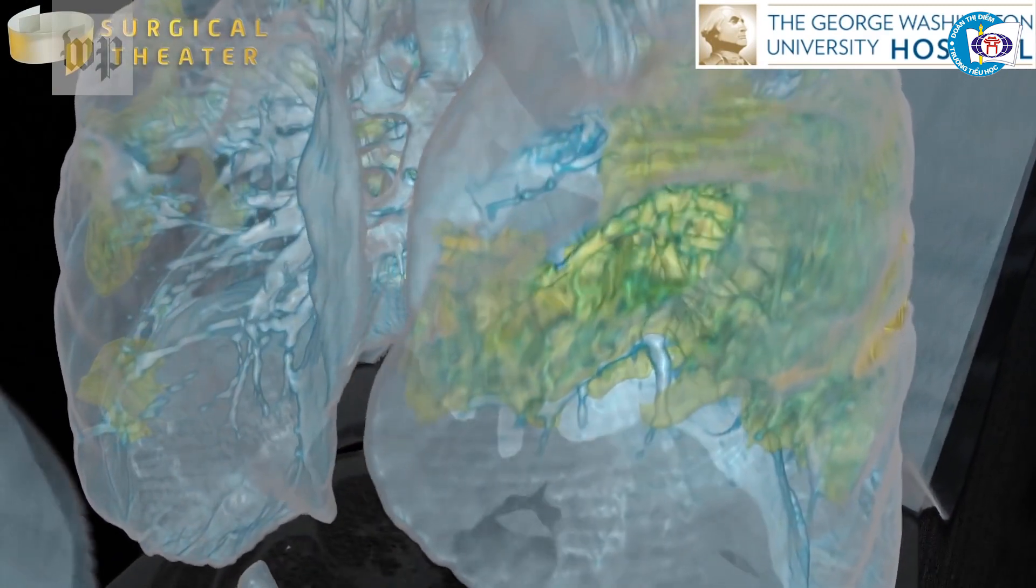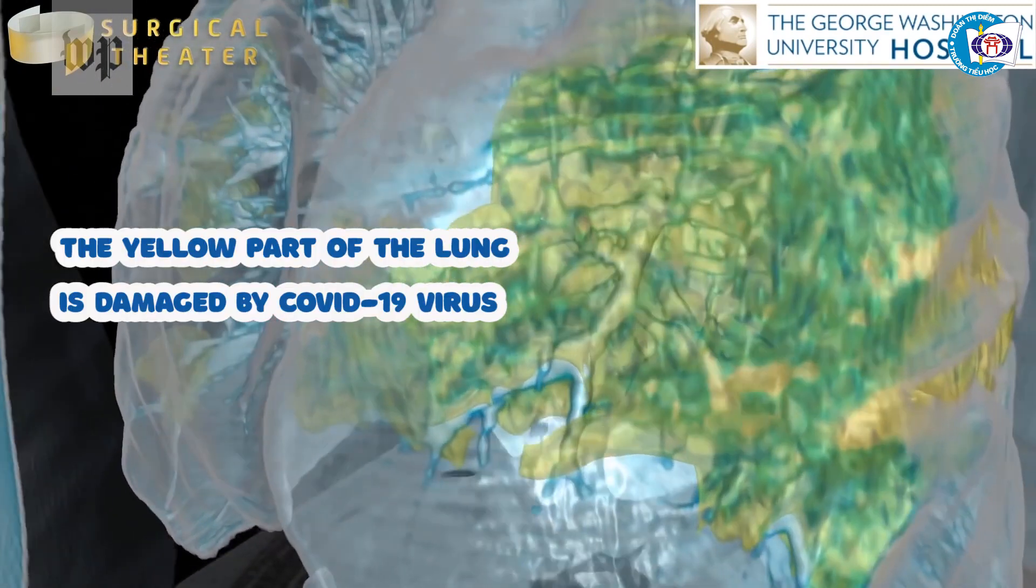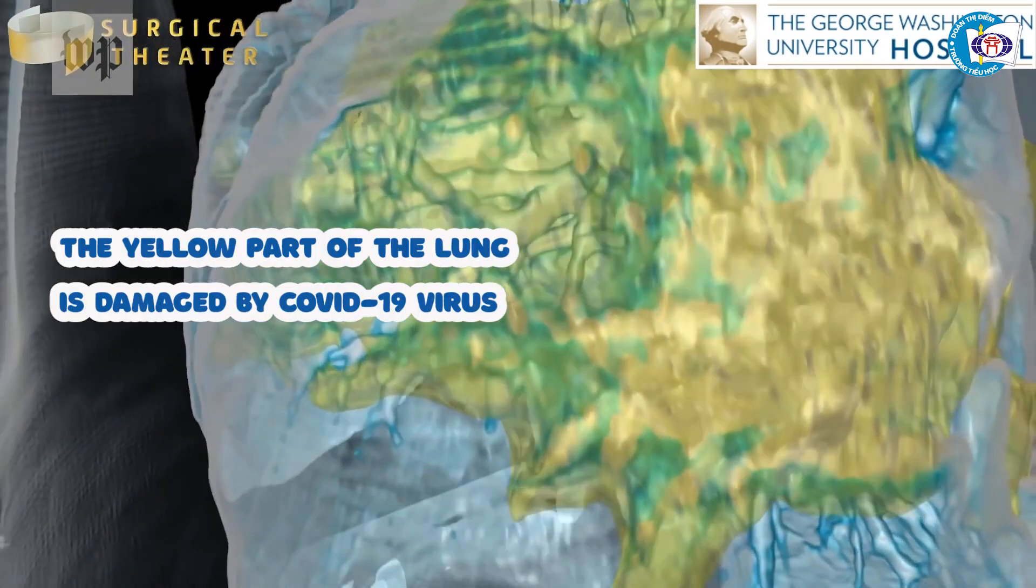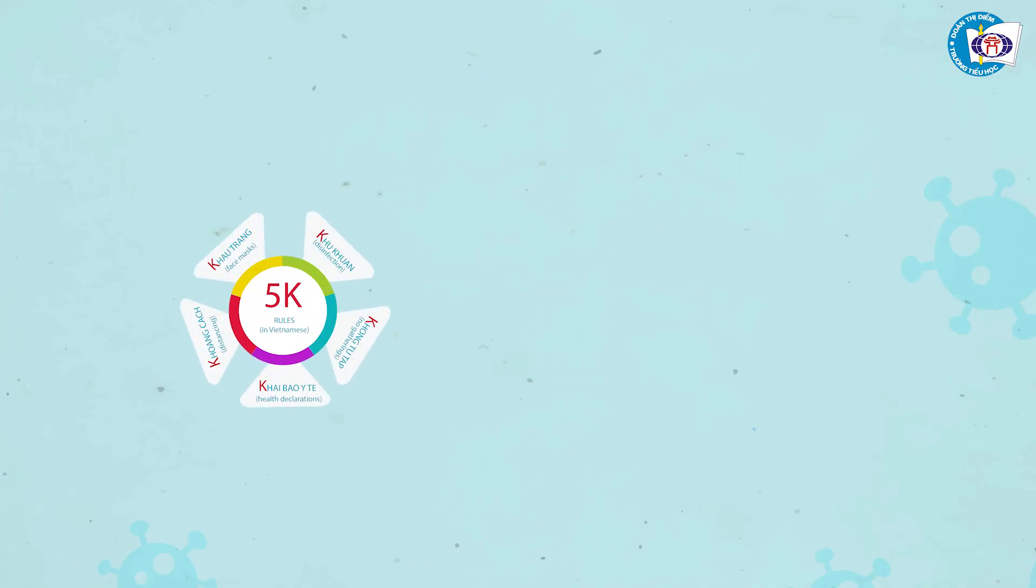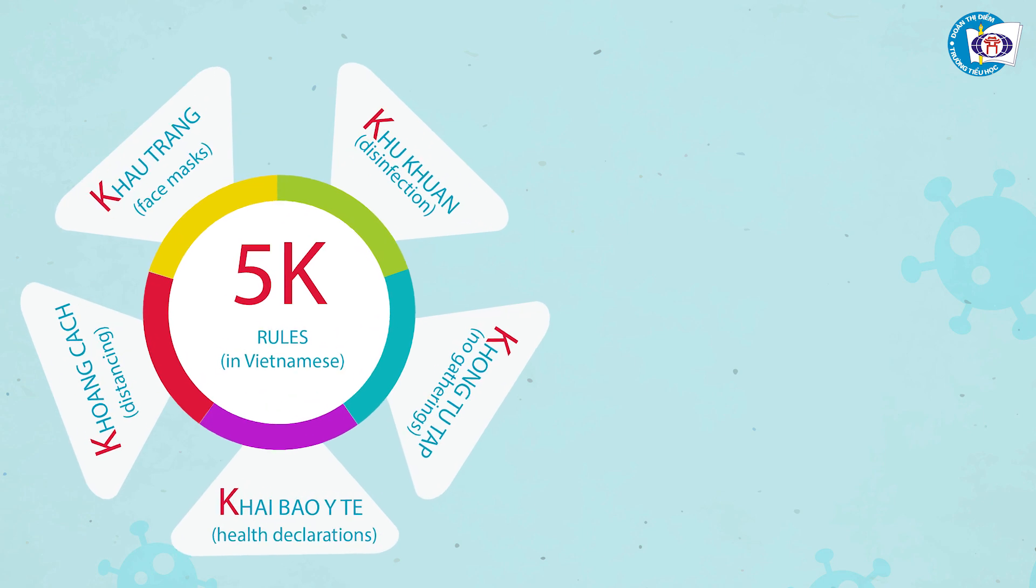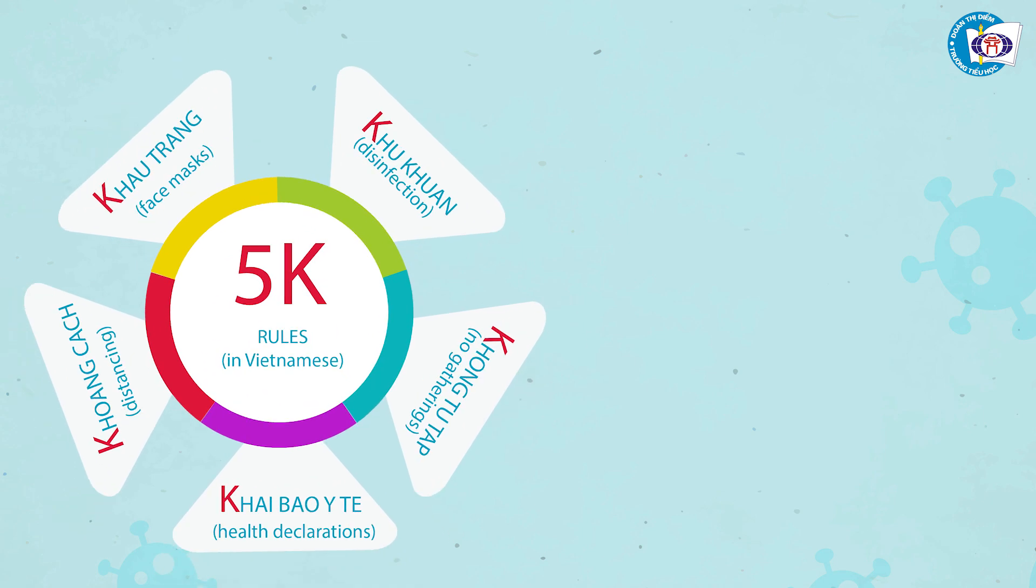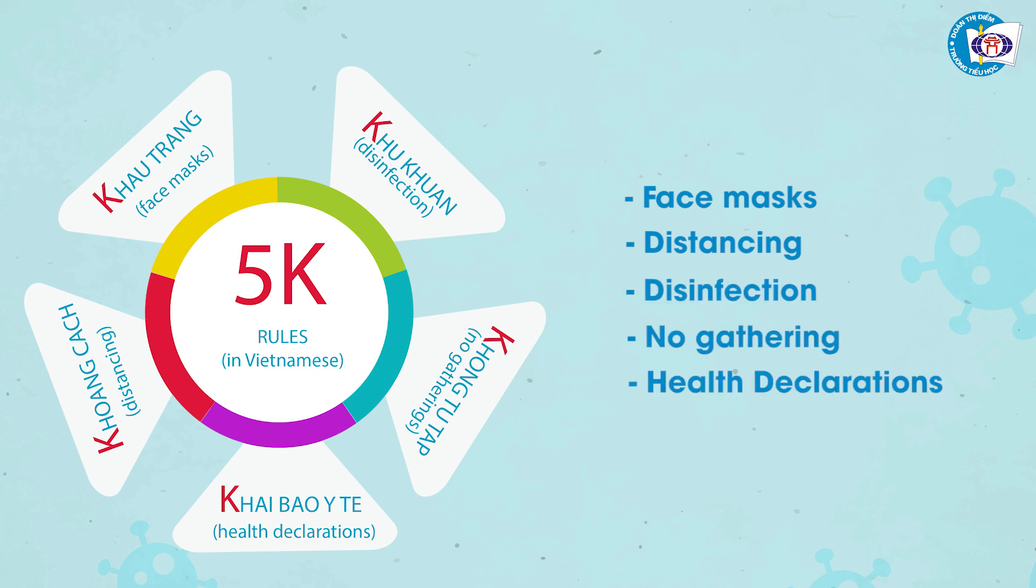Right now, the COVID-19 virus attacks our respiratory systems and our lungs. That's why during the pandemic, we have to protect our respiratory system with the 5K rules: Face mask, distancing, disinfection, no gathering, and health declarations.